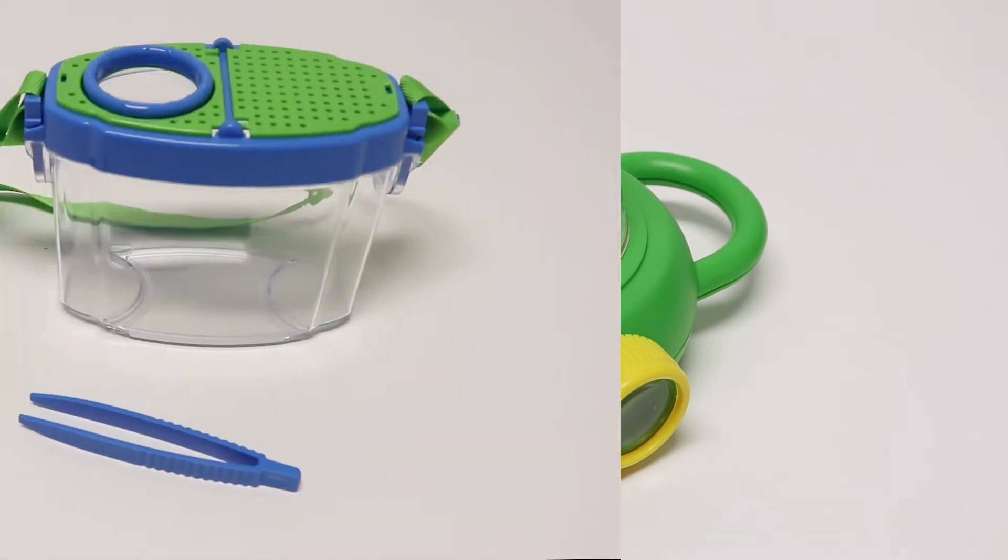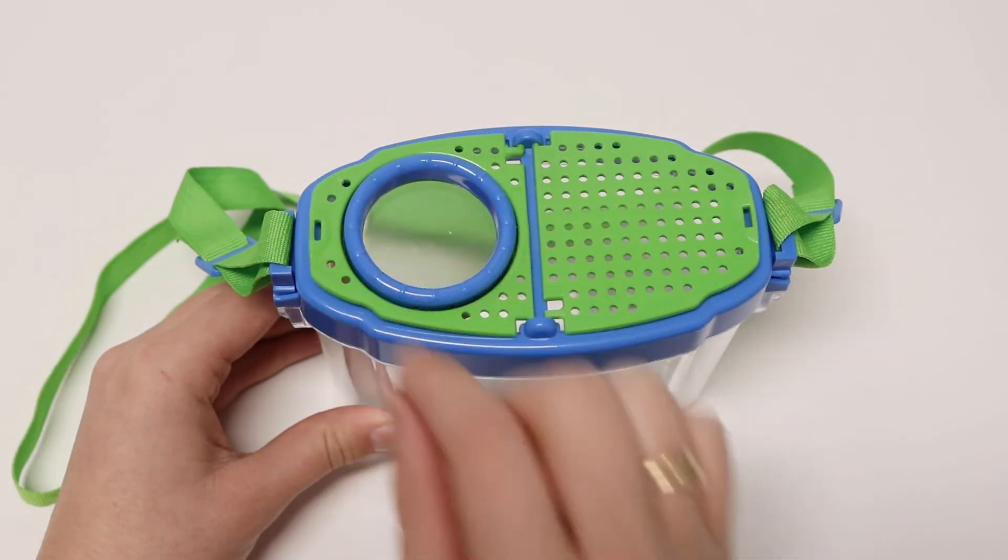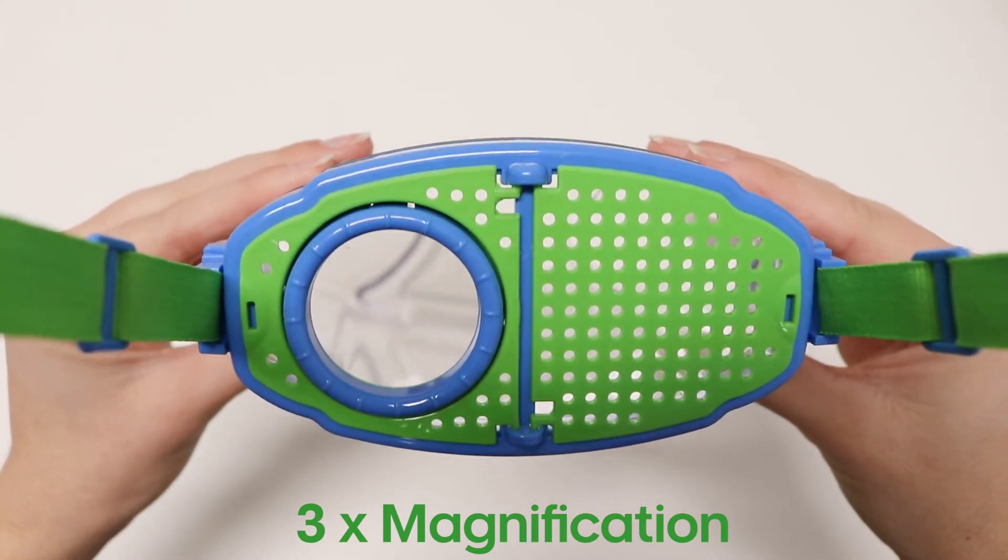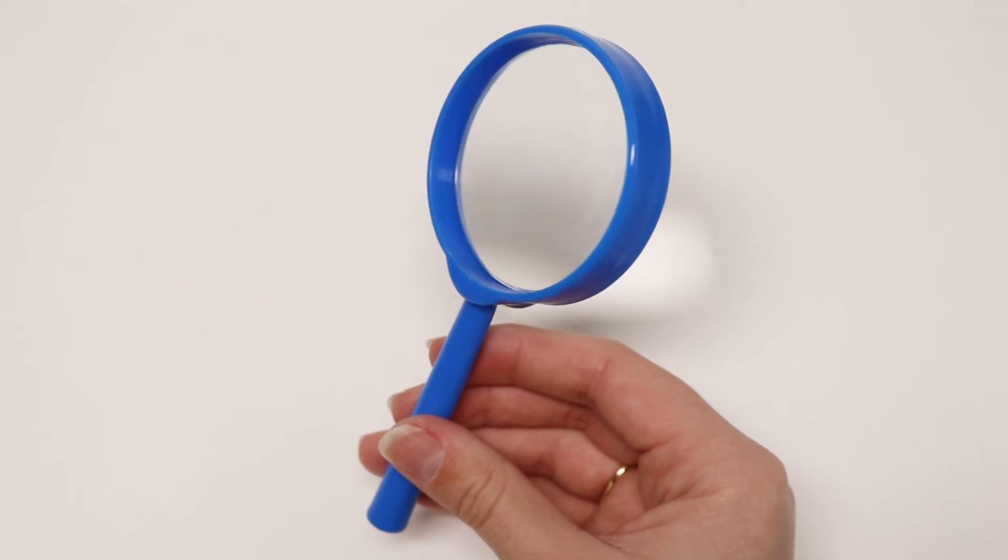This backyard explorer set includes a clear bug house with three times magnification, tweezers for collection and a magnifying glass for observation.